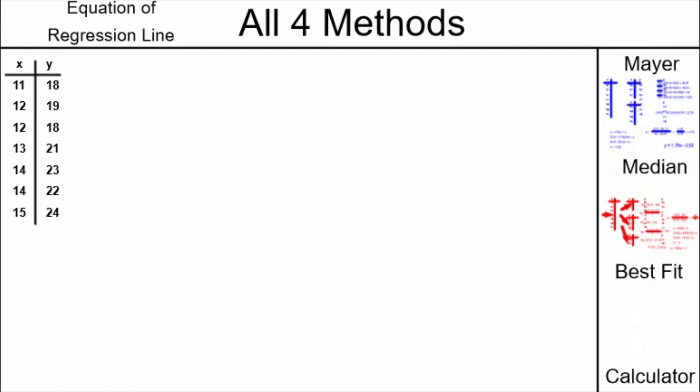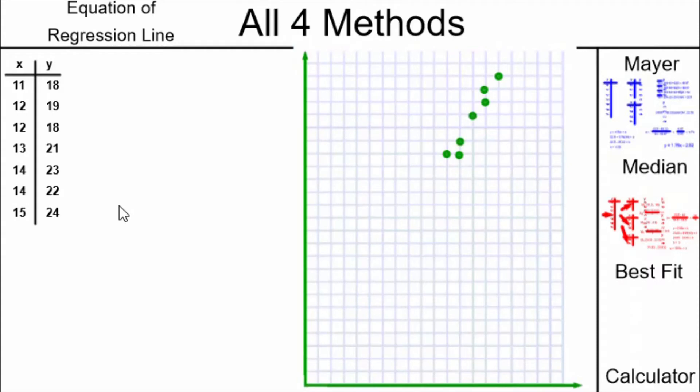The first step is to make a graph, a scatterplot from this data. My graph looks like this. I only have seven points, and they are shown on the graph.